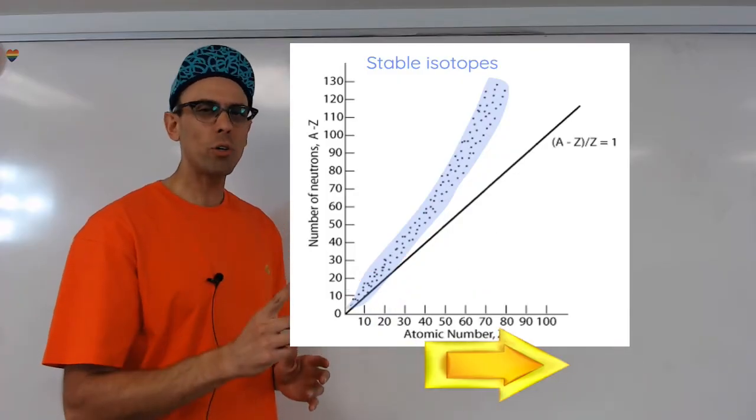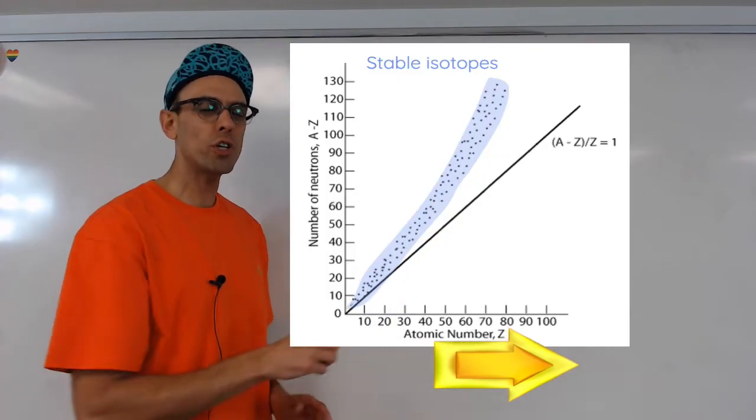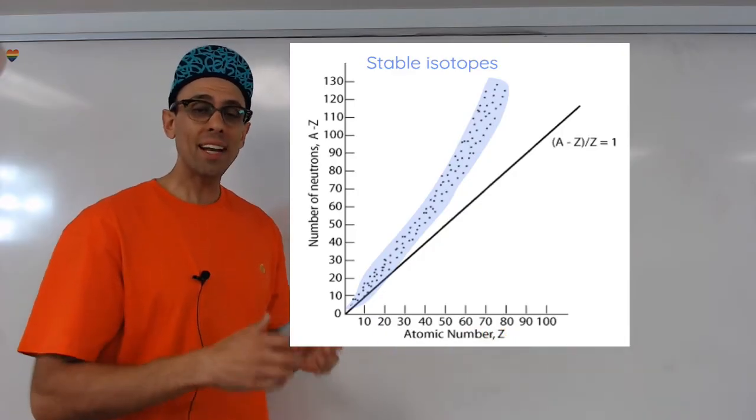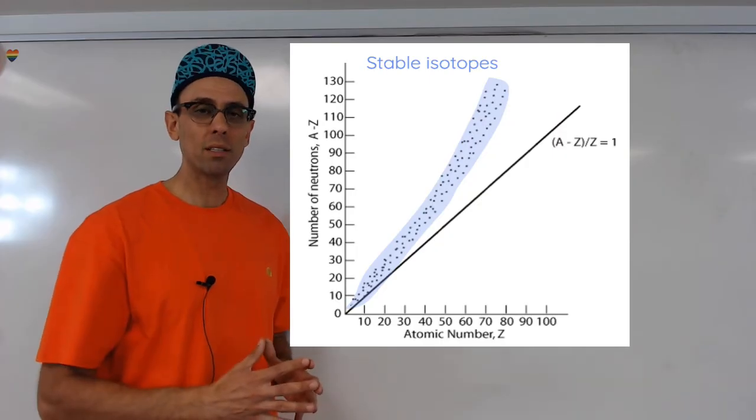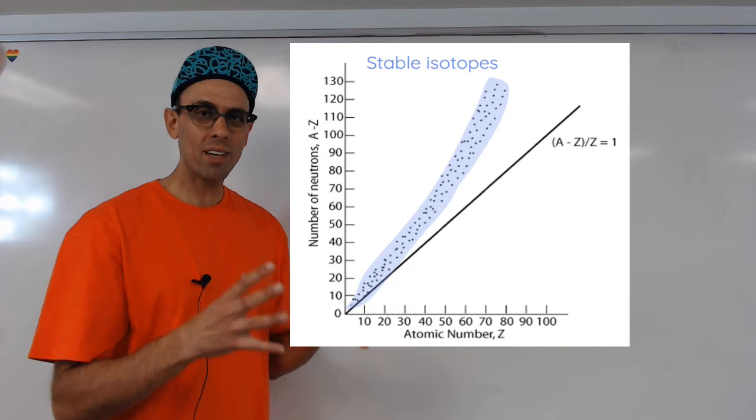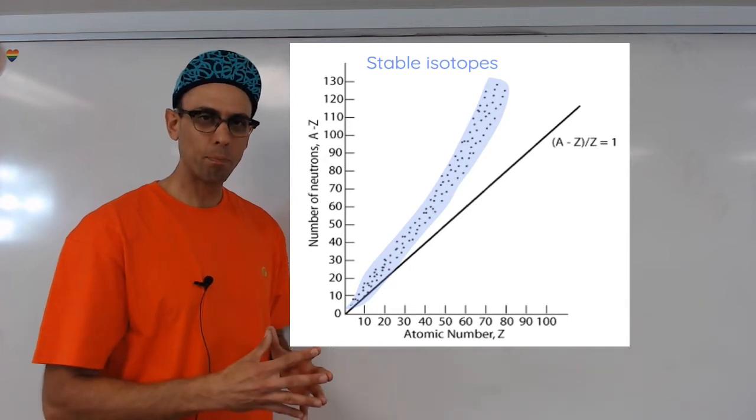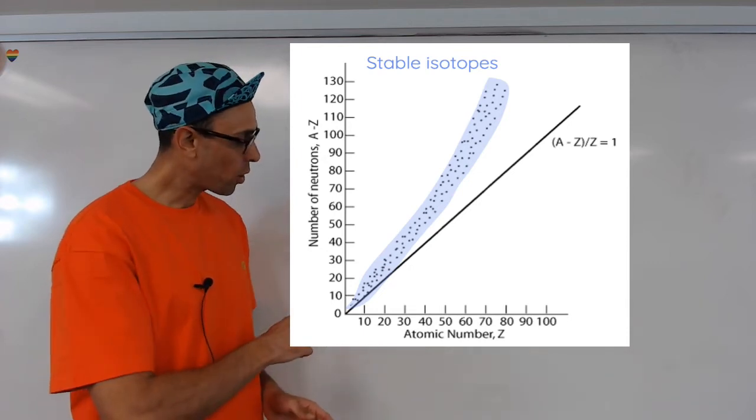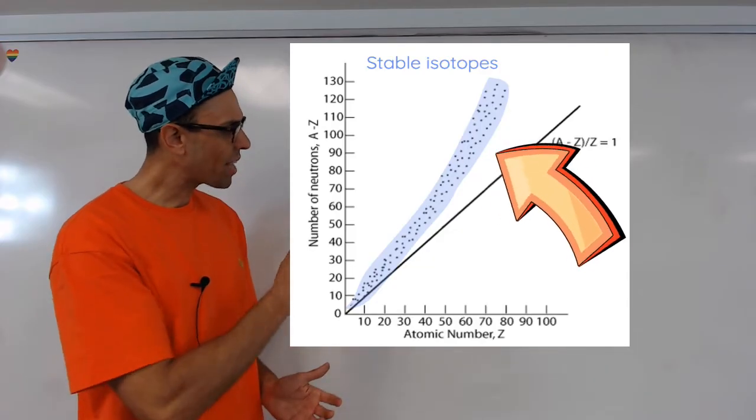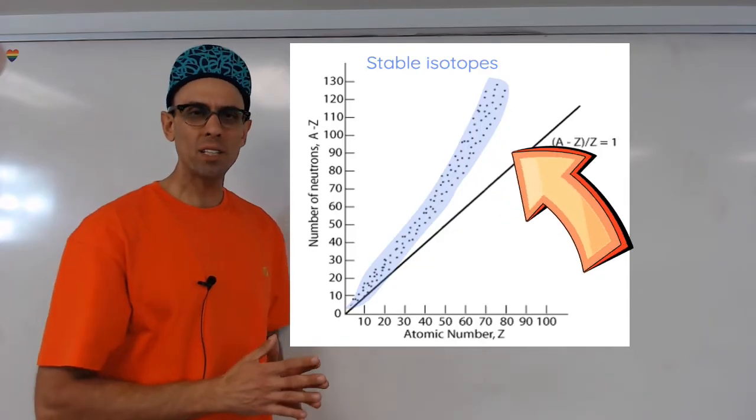But what do you notice as you move further to the right on the x-axis? It turns out that as the number of protons increases, we need even more neutrons in the nucleus to keep the nucleus stable. So as we follow the atomic number from left to right, we notice that the dots start to stray above the solid line.